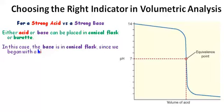In this case, the base is in the conical flask since we began with a high pH of 14. As we add the acid from the burette, you can see the pH starts to fall.